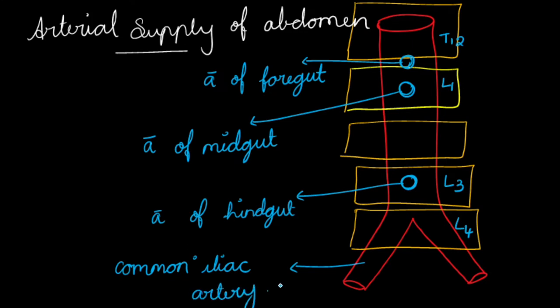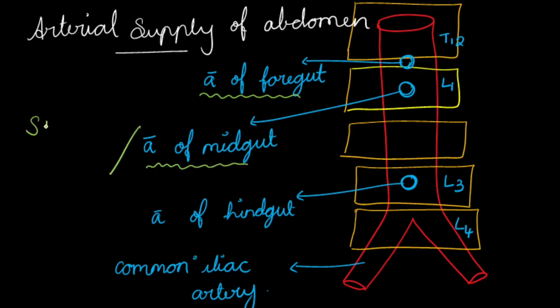In the previous video we discussed the celiac trunk. Today we are going to deal with the artery of the midgut, which is none other than the superior mesenteric artery.